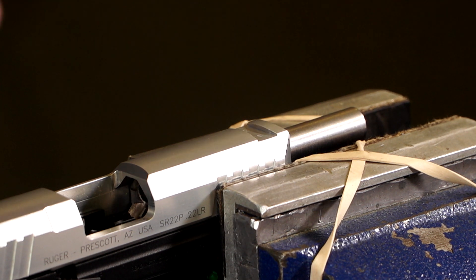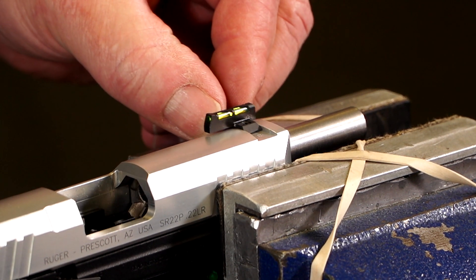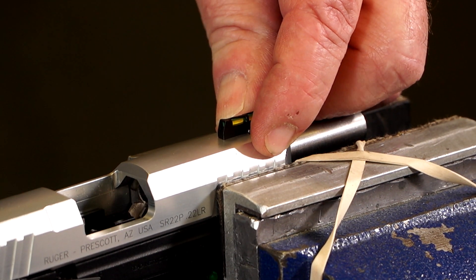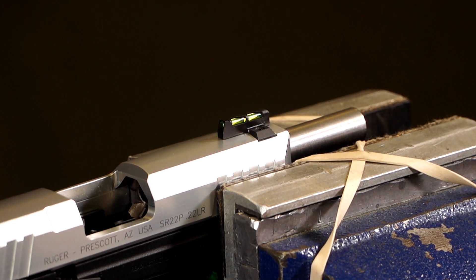So the sight will slide freely into the dovetail. It can go on left to right or right to left, either way. And then we're just going to lock down those set screws to hold it in place.